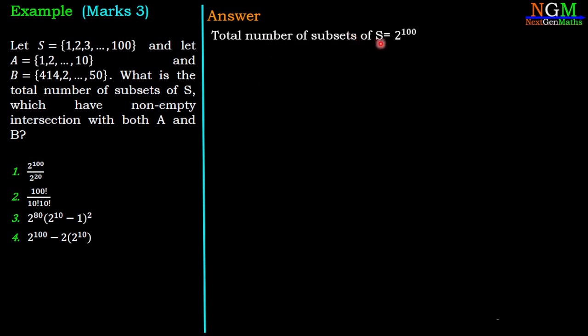Now, total number of subsets of S is 2^100, because S contains 100 elements, so its power set contains 2^100 elements. Now, total number of subsets of A union C and B union C is equal to number of elements in the power set of A union C plus number of elements in the power set of B union C minus number of elements in the power set of C.